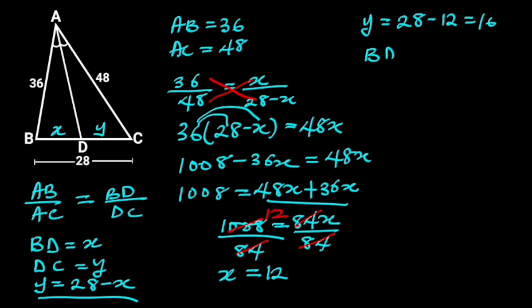Hence, BD is equal to 12, and DC is equal to 16.